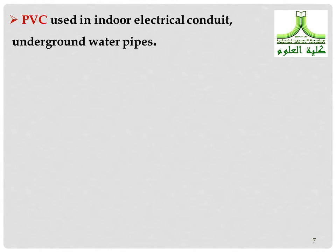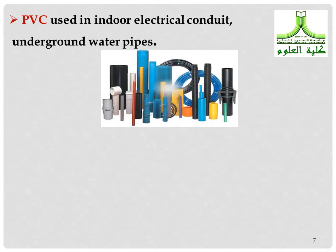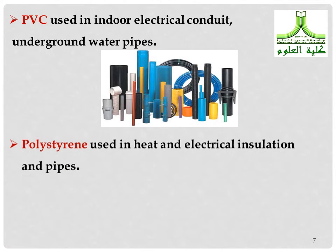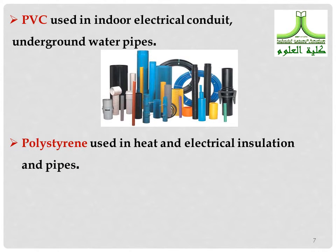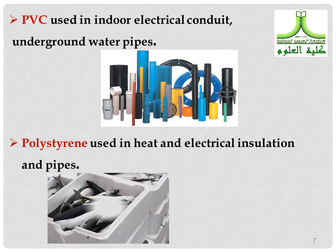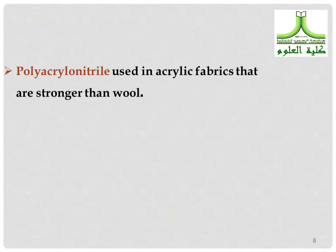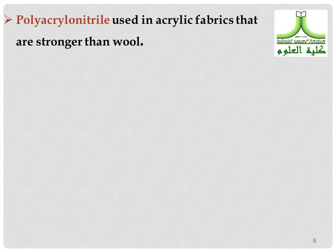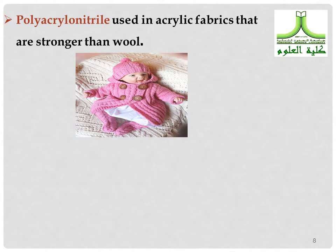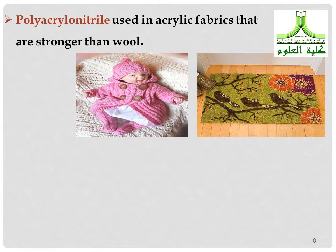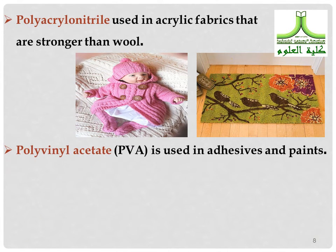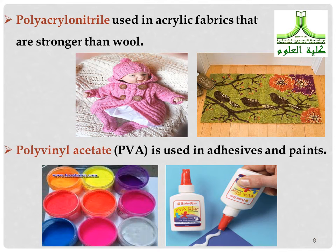PVC is used in indoor electrical conduit and in-ground water pipes. Polystyrene is used in heat and electrical insulations and fibers. Polyacrylonitrile is used in acrylic fabrics that are stronger than wool. Polyvinyl acetate (PVA) is used in adhesives and paints.